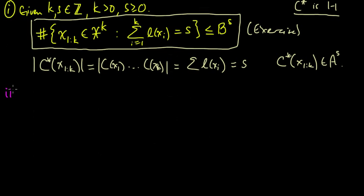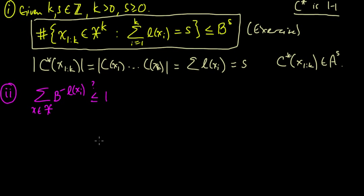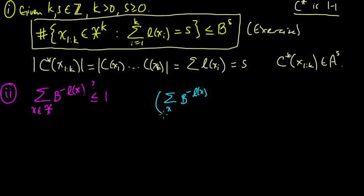Now we're going to use that fact to prove the Kraft inequality. Our goal is to prove that the sum of b^{−l(x)} over all x is less than or equal to one. Let's rewrite it: one over b^{l(x)} equals b^{−l(x)}, and our goal is to show this sum is ≤ 1. Let's do something out of the blue — let's raise this quantity to the kth power.